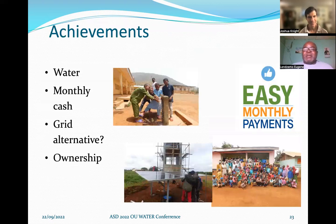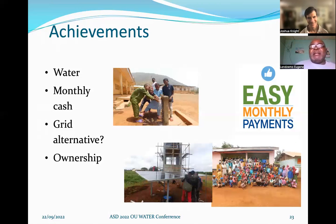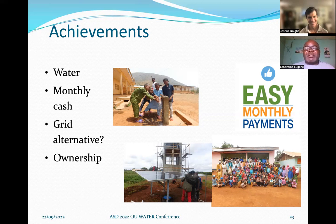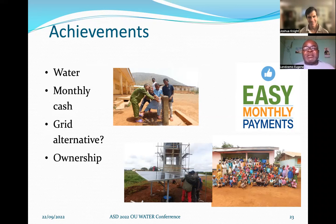Looking at achievements: at the end of the day, we were able to provide water for the community, and they were happy. Because of good organization, the community is able to pay monthly rates — we installed meters on all standpipes, and those who want water at their homes also have meters so they pay for what they consume. Because of this, Jidango and Sabangare were able to provide an alternative solution in the rainy season, using collected revenue to pay for grid power when cloud cover was high. This assured us of community ownership, as they assumed responsibility for the water project.